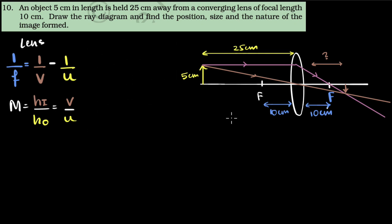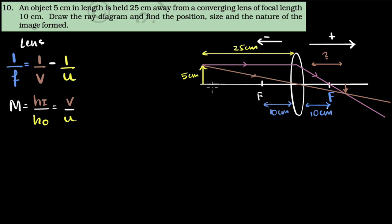Before we plug in the numbers, the next important thing is sign conventions. This formula only works when you use appropriate signs for all values. The sign convention says: draw the object always to the left of the lens or mirror, then choose the right side of the lens as positive, the left side as negative, above as positive, and below as negative. This applies to heights and distances.